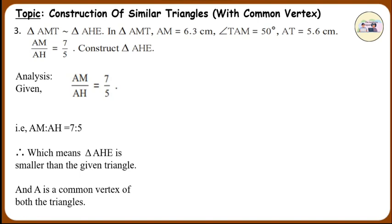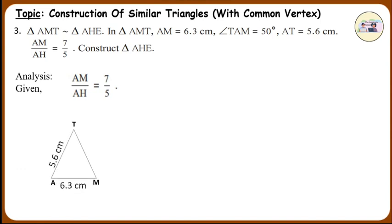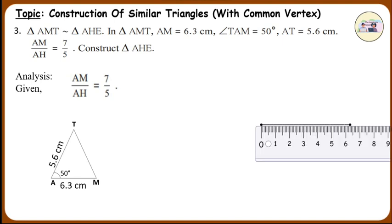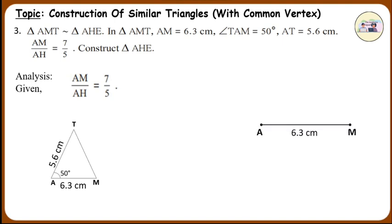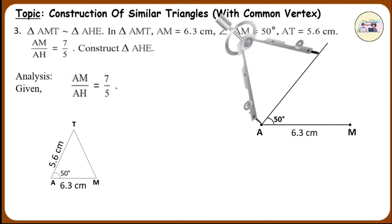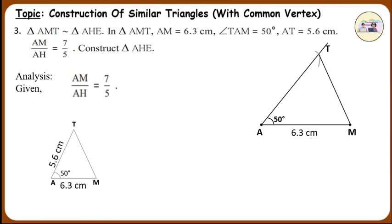Construction. Draw a rough figure of triangle AMT and mark AM is equal to 6.3 cm, angle TAM is equal to 50 degrees, and AT is equal to 5.6 cm. Construct triangle AMT. Draw segment AM of measurement 6.3 cm. Use the protractor to draw an angle of 50 degrees at vertex A. Take a measurement of 5.6 cm on the compass and construct an arc from point A. Name the intersection point as T. Draw an angle, preferably an acute angle, from point A since A is the common point of both triangles. Draw 7 arcs of equal measurements from point A since the ratio is 7 is to 5, and 7 represents the bigger triangle.